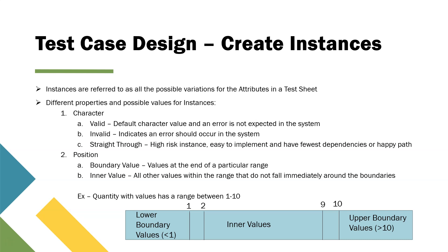So there are four different variations of a single attribute, which is the user type. All these four different values or variations are known as instances. You have to create four different instances of that attribute in your test sheet. Now let's move on to the different properties of these instances.